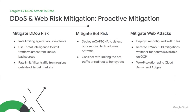I want to touch upon certain proactive mitigation strategies that can be put in place to counter DDoS and web risk. These fall into three categories. To mitigate DDoS risk, you should deploy rate limit actions against abusive clients. You can also use threat intelligence to limit traffic volumes from known bad sources like Tor exit nodes. Additionally, you can rate limit or filter traffic from regions outside the target markets. To mitigate bot risk, you can deploy reCAPTCHA to detect bots sending high volumes of traffic and consider rate limiting the bot traffic or redirecting to honeypots. To mitigate web attacks, we recommend deploying pre-configured WAF rules for various OWASP top 10 vulnerabilities. A more comprehensive protection involves deploying Cloud Armor along with Apigee Gateway for API protection.